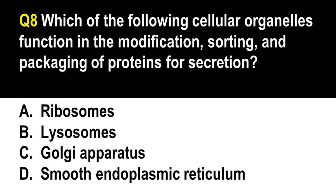Which of the following cellular organelles functions in the modification, sorting, and packaging of proteins for secretion? A. Ribosomes. B. Lysosomes. C. Golgi apparatus. D. Smooth endoplasmic reticulum. The correct answer is letter C. Ribosomes are the sites of protein synthesis — proteins are manufactured there. However, these proteins are further modified, sorted, and packaged in the Golgi body or Golgi apparatus, which resembles a stack of deflated balloons and is packed with enzymes for further protein processing. The smooth endoplasmic reticulum (SER) functions in the construction of carbohydrates and lipids. Lysosomes are small organelles that function in the disposal and recycling of macromolecules and other wastes.